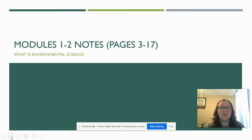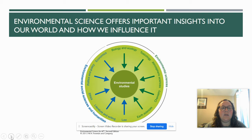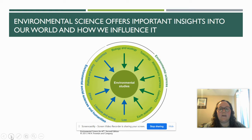Welcome to the first AP Environmental Science lecture. This one covers modules one and two in your book, which is pages three through 17. The focus of this lecture is to discuss what environmental science is and is not. In environmental science, we will be looking at biology and ecology, earth science, toxicology, atmospheric sciences, as well as law, politics, and policy portions. This graphic gives you an idea of what all we will be looking at throughout our time together.